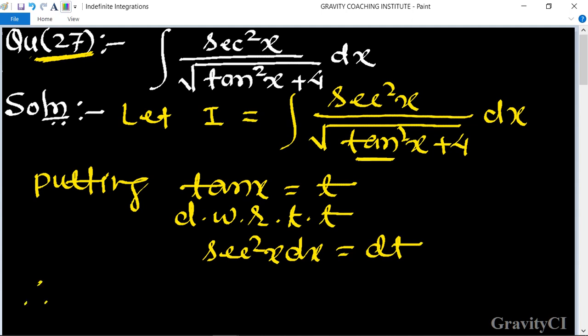So therefore, integration I is equal to the integral of 1 upon root under t² plus 2² dt, where sec²x dx has become dt.